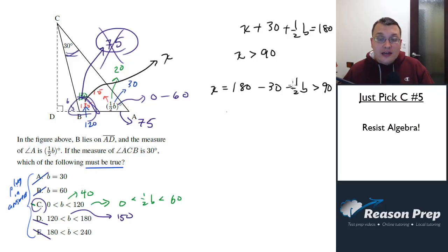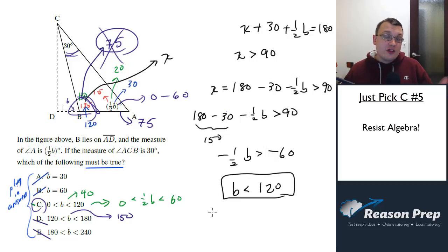And I know that this is all greater than 90 because X has got to be greater than 90, right? So it's just setting up an equation and then throwing in an inequality. So now I'm left with 180 minus 30 minus 1 half B is greater than 90. I'm gonna do a little bit of rearranging here. This is gonna be 150, so I'm gonna get negative 1 half B has got to be greater than negative 60.